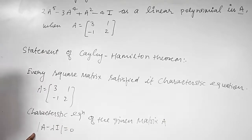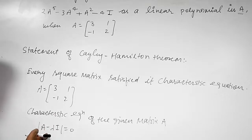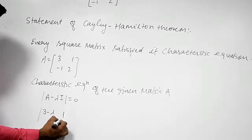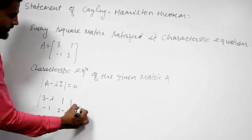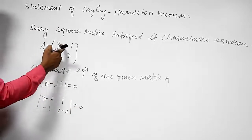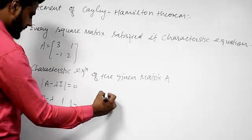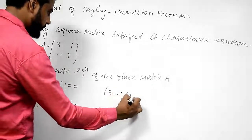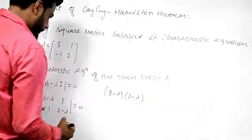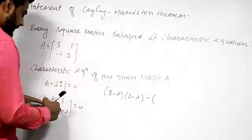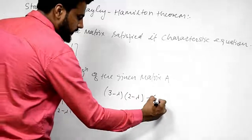The value of determinant of (A minus lambda I) will be: (3 minus lambda)(2 minus lambda) minus (1)(-1) equals 0. We only subtract lambda from the diagonal elements. Now we will solve this equation.